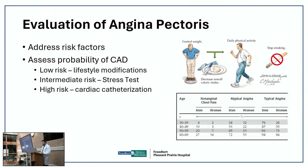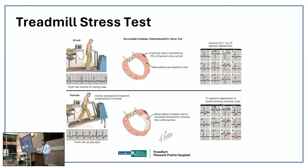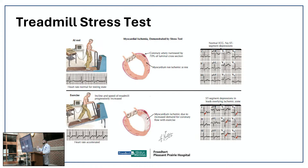A treadmill stress test is the simplest option. You get an EKG, we put you on a treadmill connected to a monitor, and watch for rhythm changes. If you can do more than six minutes — nine minutes is even better — and your score is good, your risk of future heart attack is very low. But if you only do three minutes, your EKG looks abnormal, or you have chest pain during the test, we need to investigate further with cardiac catheterization.